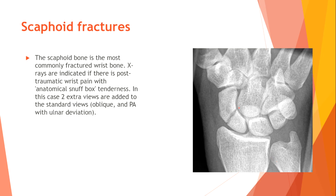Scaphoid fractures. The scaphoid bone is the most commonly fractured wrist bone. X-rays are indicated if there is post-traumatic wrist pain with anatomical snuffbox tenderness. In this case, two extra views are added to standard views: oblique and posterior-anterior with ulnar deviation.